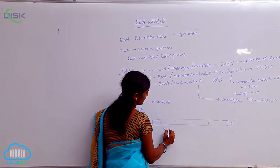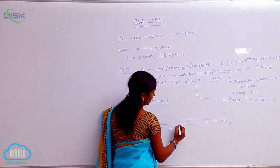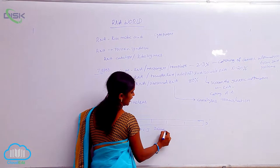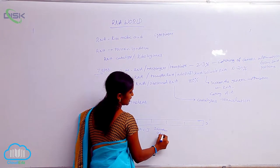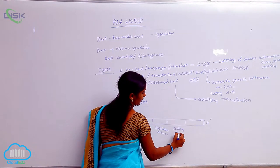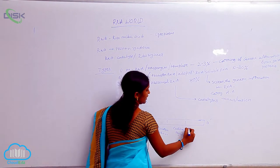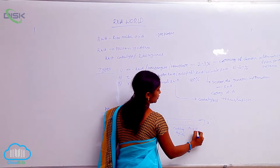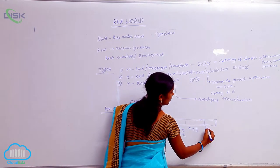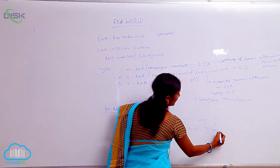Non-coding region 1, initiation codon, coding region, and then non-coding region 2 and polyadenine tail.